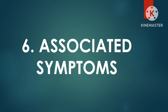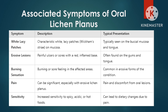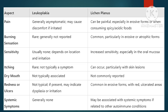Regarding associated symptoms: leukoplakia is typically asymptomatic but may cause discomfort if irritated. Burning sensations or significant sensitivity are very rare, though redness or ulcers could indicate irritation or dysplasia. On the other hand, lichen planus is often painful, especially in erosive forms. It may cause burning sensations, increased sensitivity, and itching — particularly with skin lesions — as well as redness or ulcers in the mouth. It may also be linked with systemic autoimmune conditions.